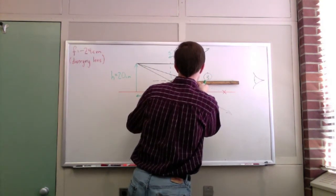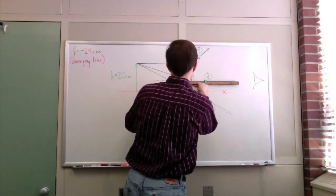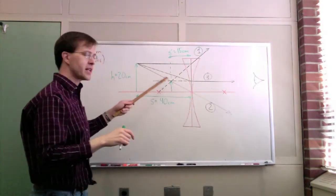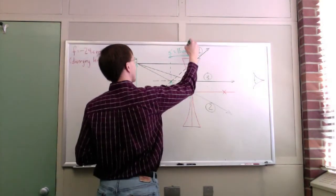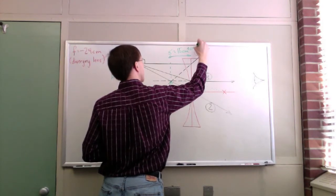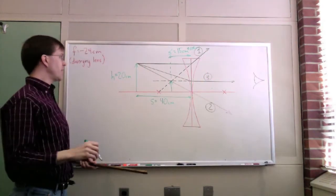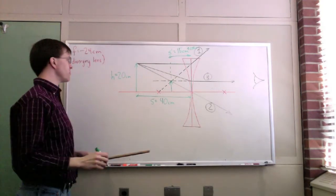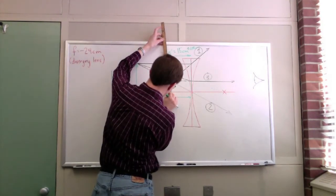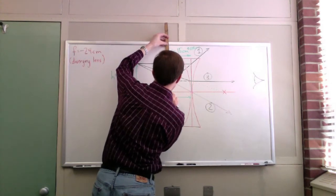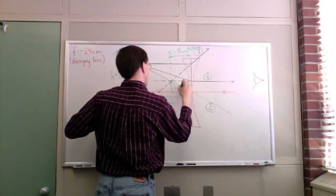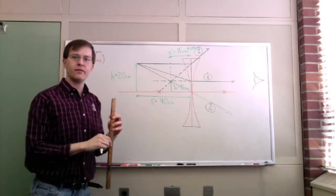Measuring the image distance s prime from the lens over to that image point, I get almost exactly 15 centimeters — I'll say 15 ± 0.5 centimeters. The lines came together very nicely. Measuring the image height h prime from the central axis, I get almost exactly 8 centimeters. So h prime equals 8 centimeters.